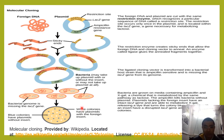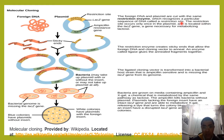You will see here that this is a foreign DNA molecule and this is a plasmid. This is the extracted genomic DNA of this organism. Now you will see here that this foreign DNA and plasmid are cut with the same restriction enzymes.